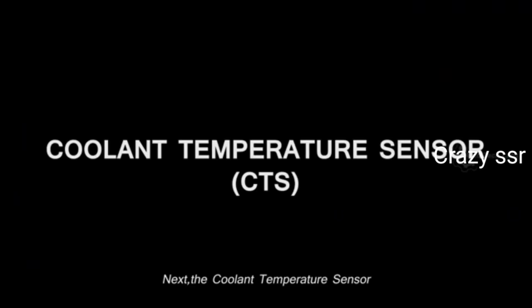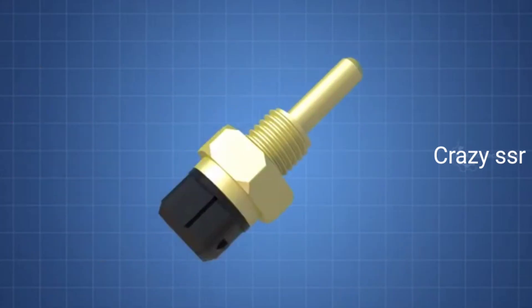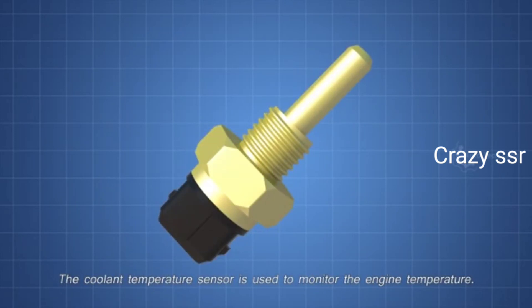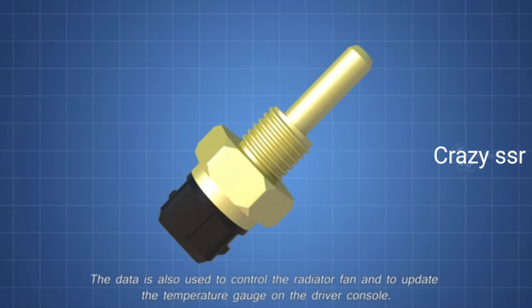Next, the coolant temperature sensor. The coolant temperature sensor is used to monitor the engine temperature. The ECU will use this data to manage fuel injection and ignition time. Some engines have more than one coolant temperature sensor. The data is also used to control the radiator fan and to update the temperature gauge on the driver console.